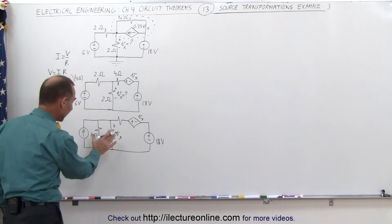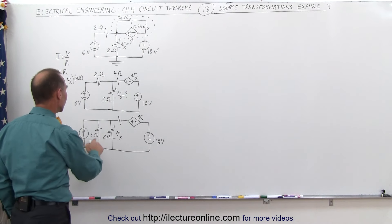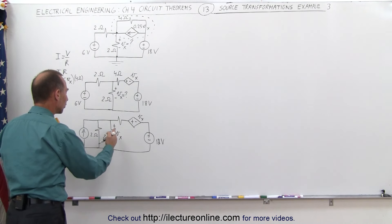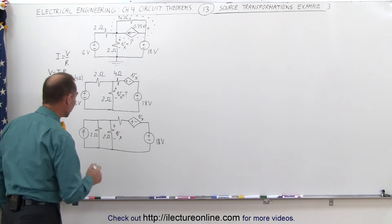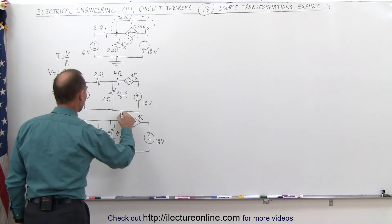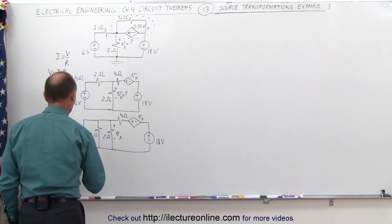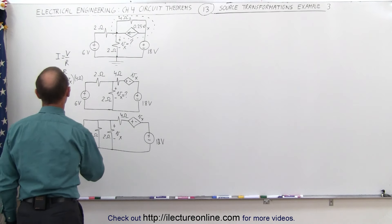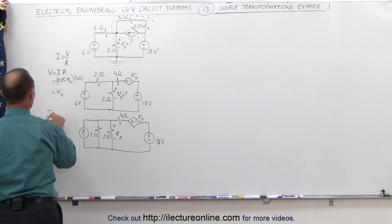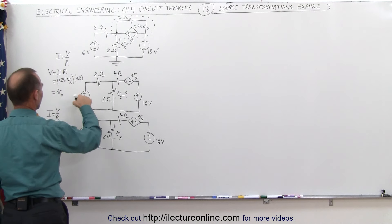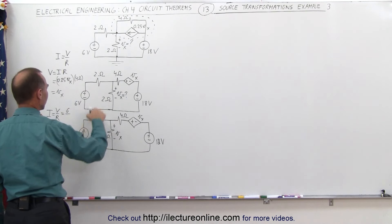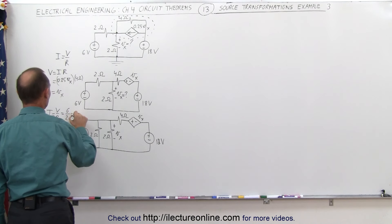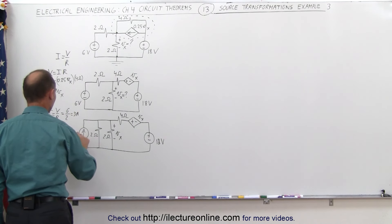Now we're going to combine these two resistors. Since they're in parallel, it's product over sum: the product is 4, the sum is 4, giving a single 1 ohm resistor. The 4 ohm resistor is still there. To find the current for the source transformation from voltage to current: I = V/R. Our voltage was 6 volts and the series resistance was 2 ohms, giving 3 amps. So this becomes the 3 amp source.